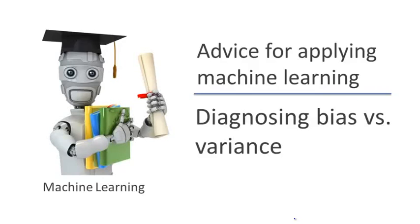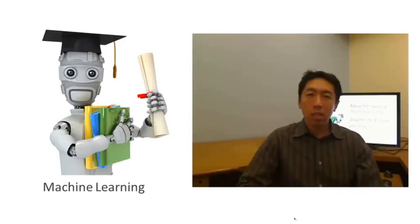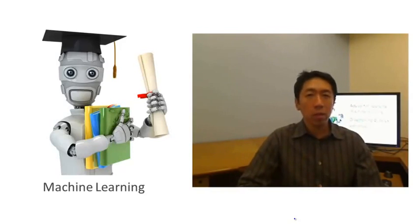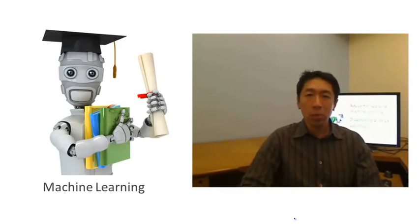If you run a learning algorithm and it doesn't do as well as you were hoping, almost all the time it will be because you have either a high bias problem or a high variance problem — in other words, either an underfitting problem or an overfitting problem. It's very important to figure out which of these two problems you actually have, because knowing that will give a very strong indicator for what are the useful and promising ways to try to improve your algorithm.